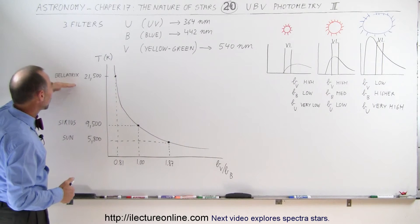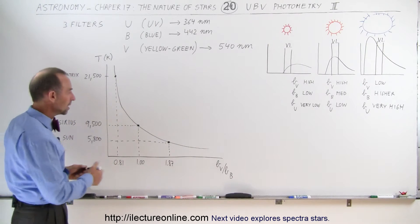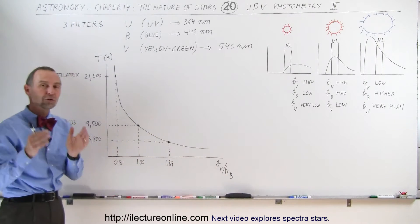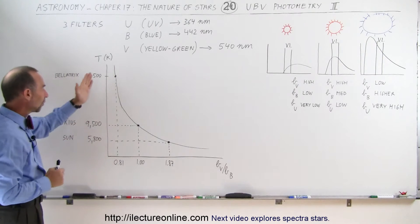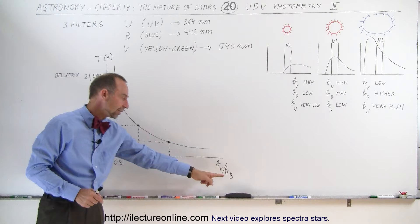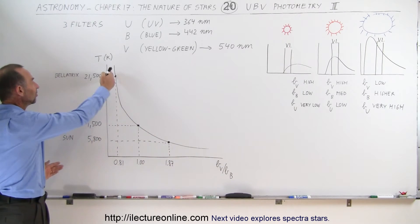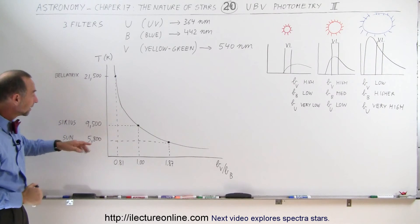We can see that for Bellatrix we have a very low ratio, the ratio between the visible light coming through and the blue light coming through, because much of the spectrum is shifted towards the blue and the UV radiation. So when we have a small ratio between the visible light brightness versus the blue light brightness, we know that must be a very hot star. In this case, Bellatrix at 21,500 surface temperature in Kelvin.